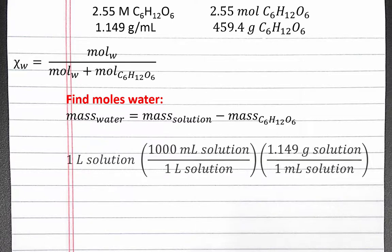Using dimensional analysis, we can convert our 1 liter of solution into grams of solution using the density of the solution in the problem, and 1 liter is 1000 milliliters. Completing this calculation, we have 1149 grams of solution in 1 liter of solution.